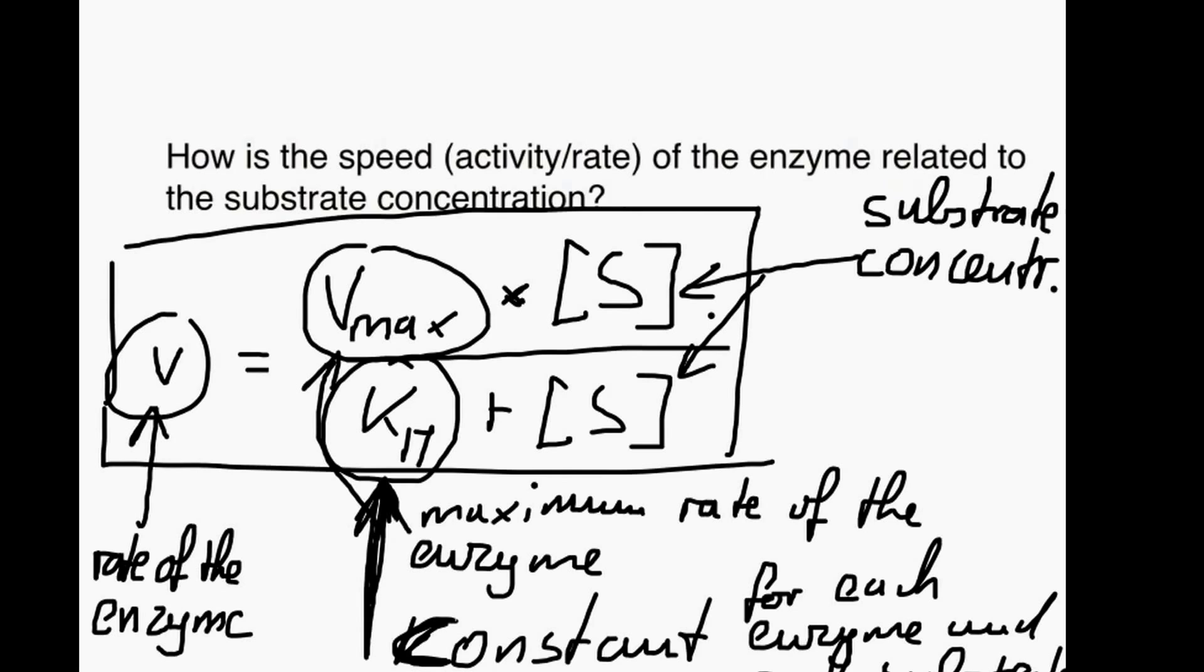Km is this constant, and actually it is made up of these k-1, k1, k2 and so on. But for the time being we just say this is a constant, and I will explain a little bit later what this actually means.